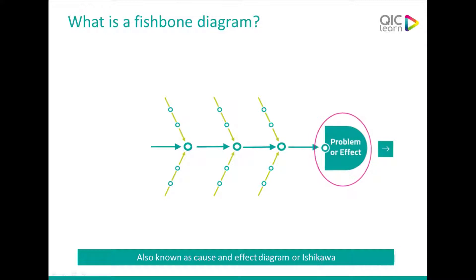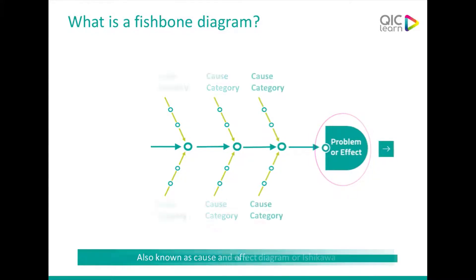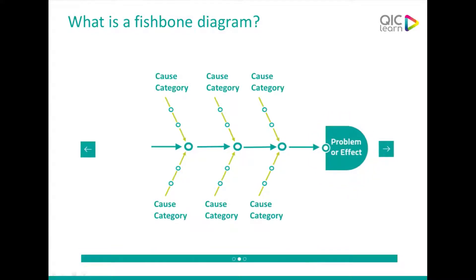The problem is displayed at the head of the fish. Along the spine are the cause categories. These are the high level groupings which you use to organize causes. The categories you choose will depend upon the problem being analyzed.